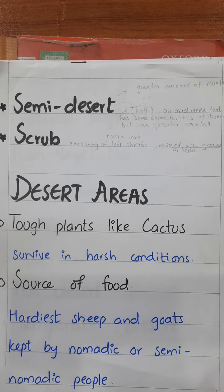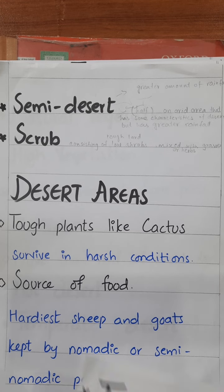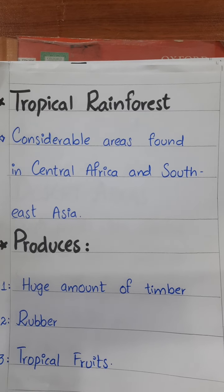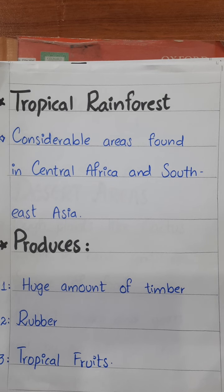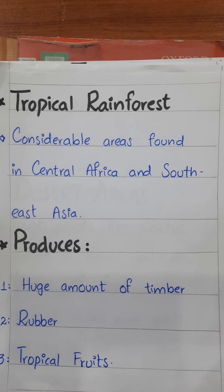Then we have tropical forests. There are some areas where we have tropical rainforest, like in Central Africa and Southeast Asia, which produce a huge amount of timber. And tropical forest products such as rubber and tropical fruits.